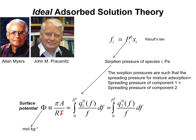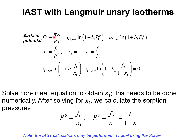The surface potential can be determined from information on the unary isotherms. For the special case in which the unary isotherms are described by the Langmuir isotherms with saturation capacities q1_sat for component i and q2_sat for component ii, the integrals may be determined analytically to obtain phi in the following form.